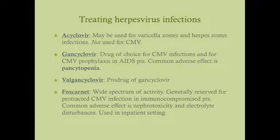The key adverse effect of ganciclovir to know for the USMLE is pancytopenia. Valganciclovir is just a prodrug of ganciclovir, so they essentially do the same thing. Foscarnet is the second-line drug for CMV — it has a wider spectrum of activity, is reserved for protracted CMV infections in immunocompromised patients, but is nephrotoxic and can cause electrolyte disturbances, requiring inpatient use.